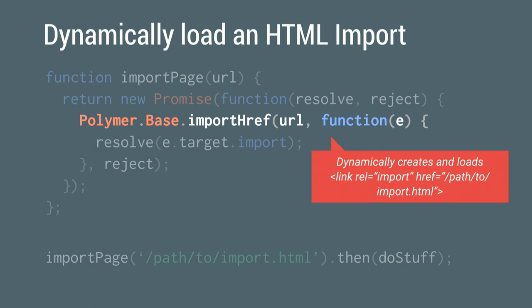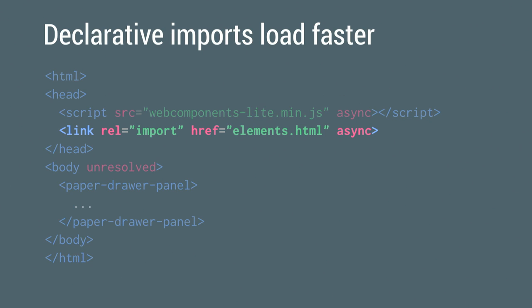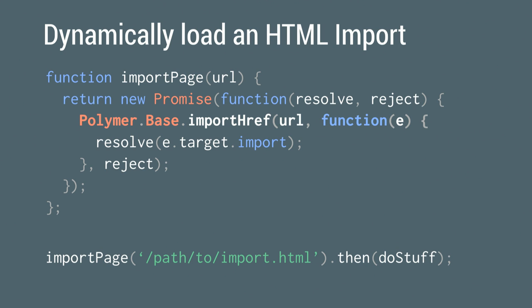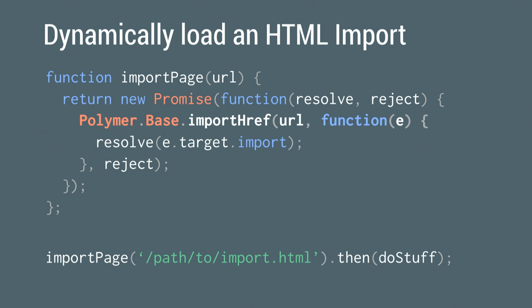Polymer has an awesome method called importHref that allows you to import an HTML file dynamically. It creates a dynamic HTML import and loads it into your document. In this example, I've wrapped it in a promise — importHref to the URL of the HTML file I want — and then do stuff after. It's really easy to work with dynamic imports in script.